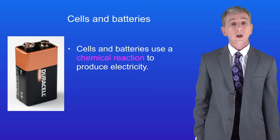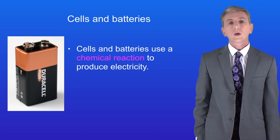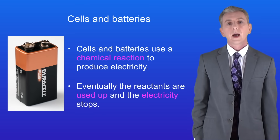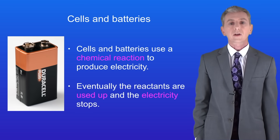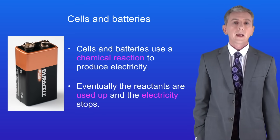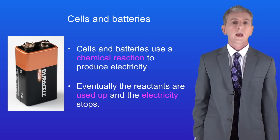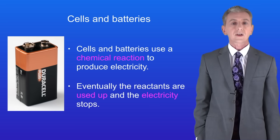In the last video we looked at how chemical cells and batteries work — they use a chemical reaction to produce electricity. However, in cells and batteries eventually the reactants are used up and the electricity stops. In this video we're looking at a different kind of cell called a fuel cell. These also generate electricity but in a different way.